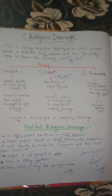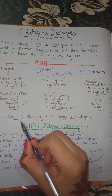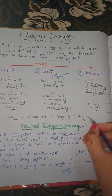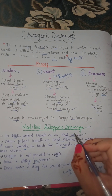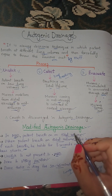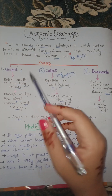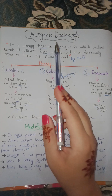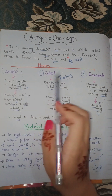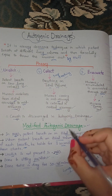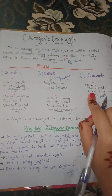As already mentioned, cuff is discouraged in autogenic drainage. Now we will discuss modified autogenic drainage. In modified autogenic drainage, the unstick phase is absent — whereas standard autogenic drainage has three phases: unstick, collect, and evacuate, modified autogenic drainage has only two phases: collect and evacuate.